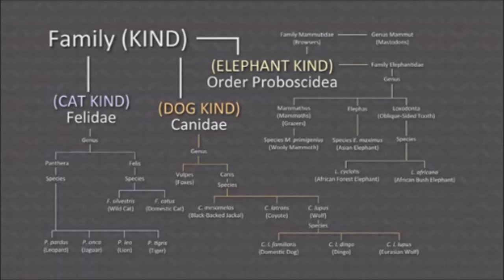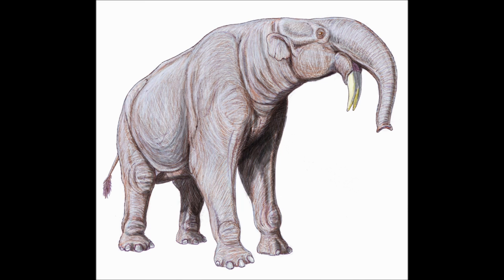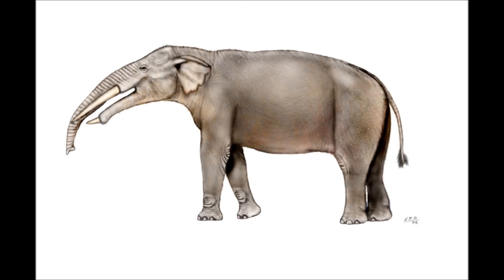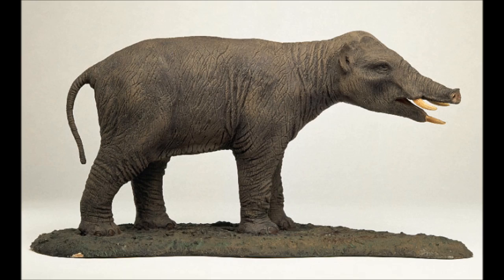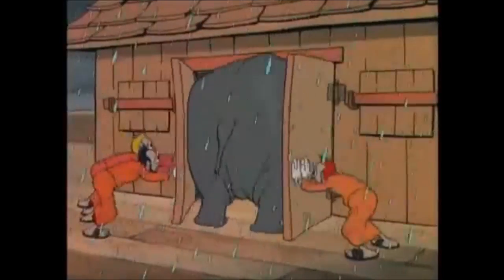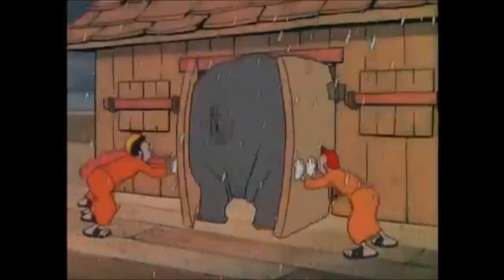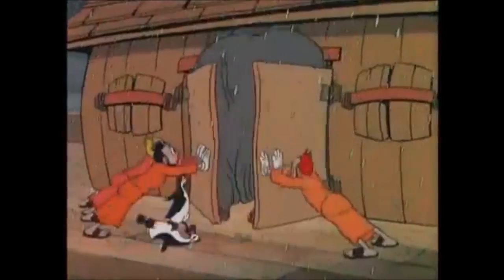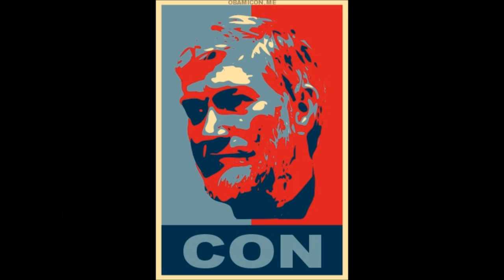Even here, we can see that Ham snuck the entire order Proboscidia and defined it as the elephant kind, obviously because there are no fewer than five different families of elephant-like creatures that belong to this order, and having ten members of the elephant kind on the ark would pose logistical issues for Noah, and even more credibility issues for Ham.